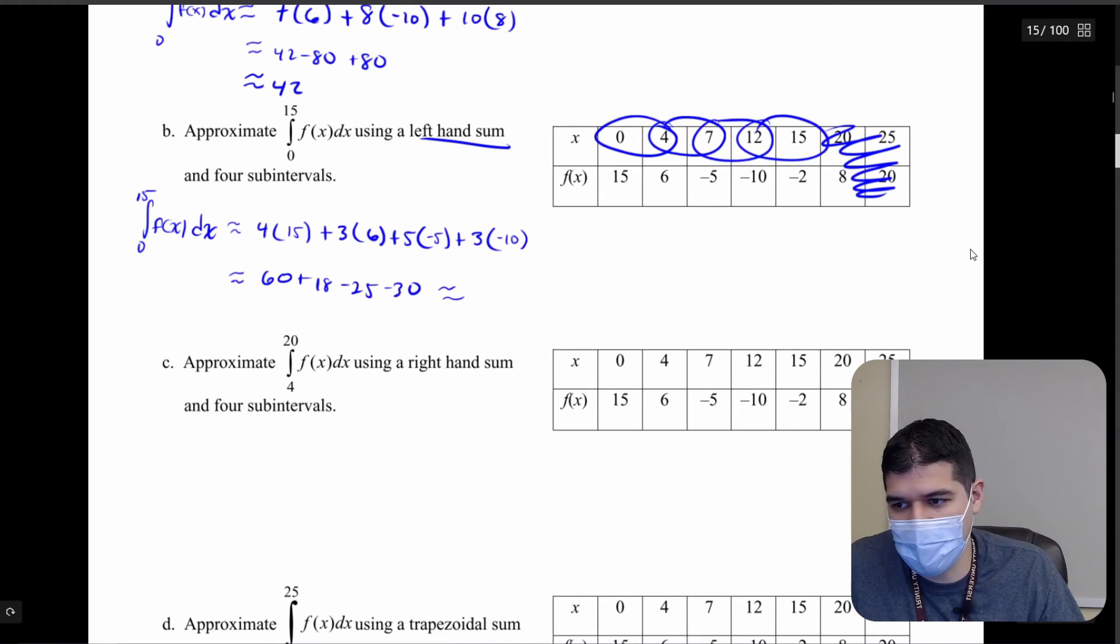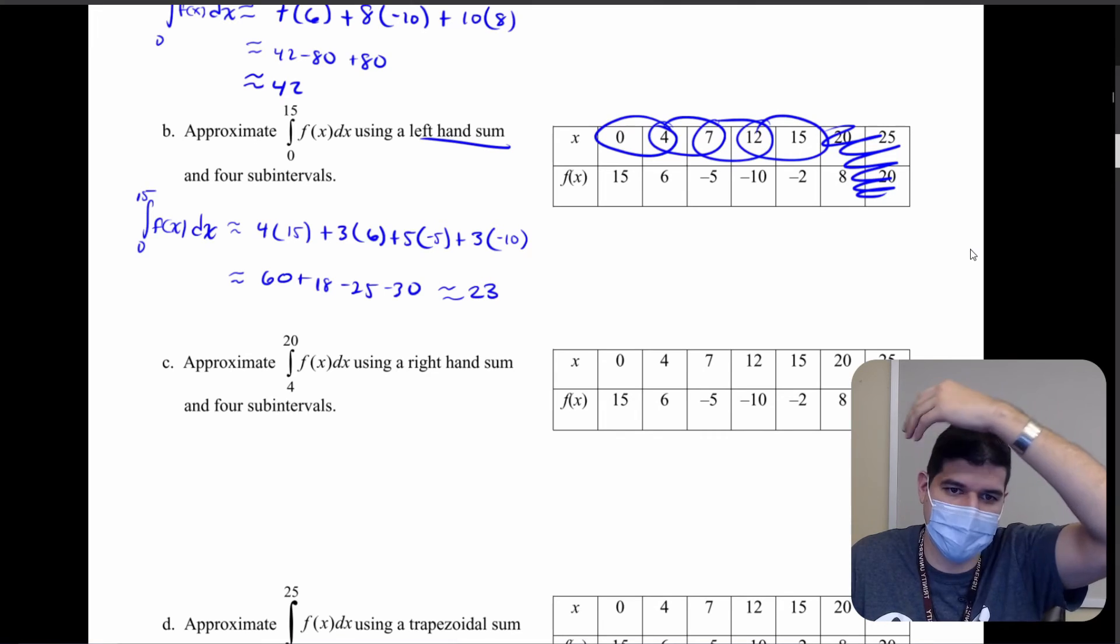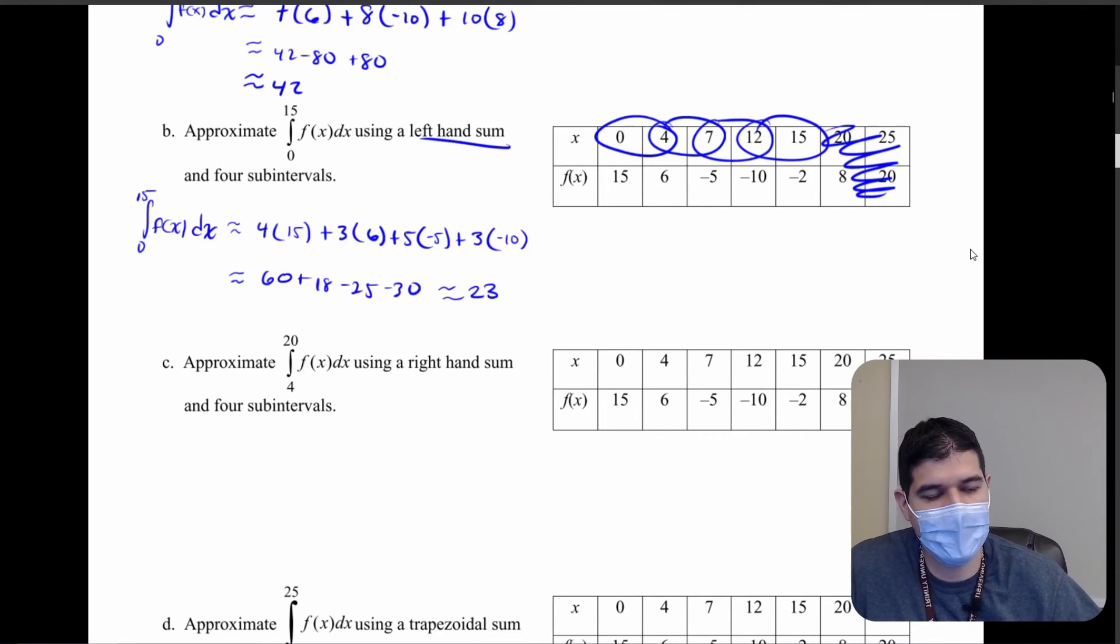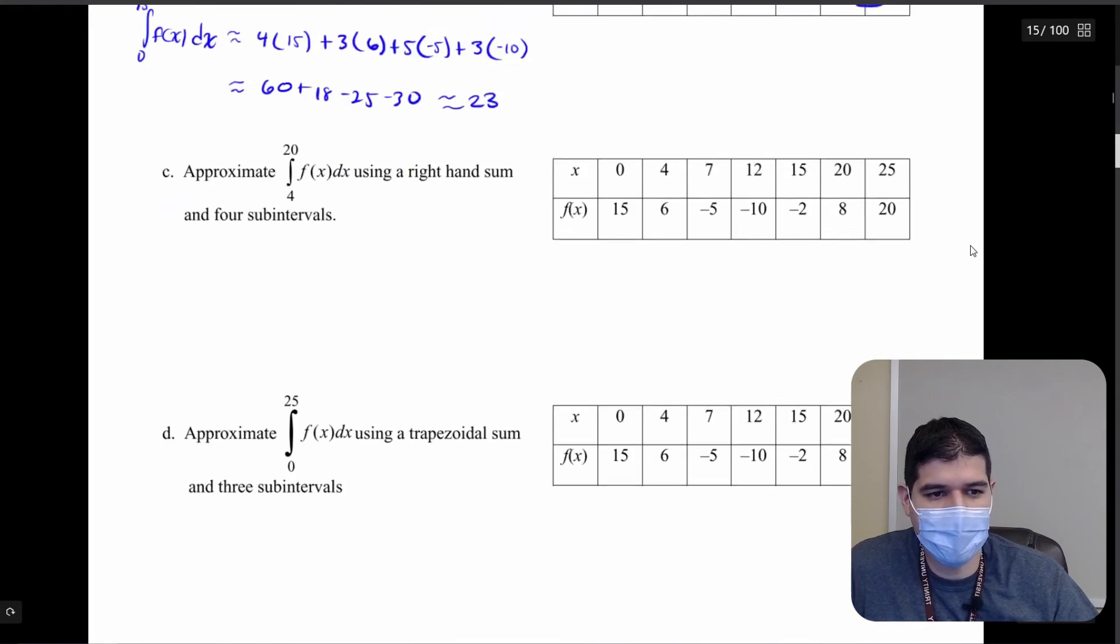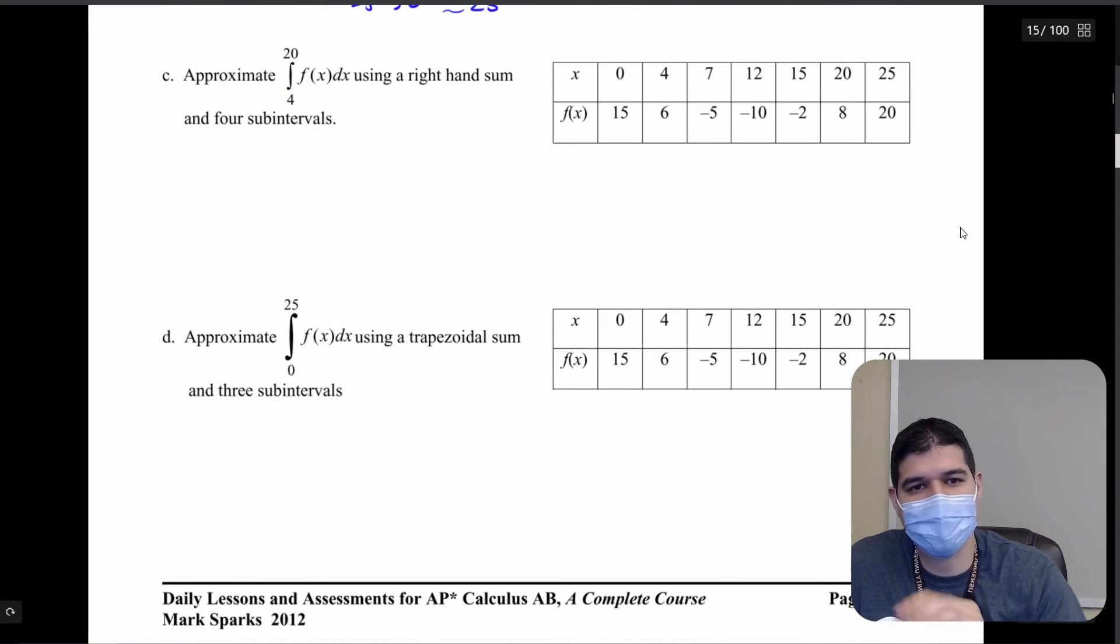And again we're just keeping the approximation signs as we go through this but you're just cutting off your intervals and you're being very clear: left, right, midpoint, trapezoid, and you're using those same calculations that we learned about before. So now I'm going to let you guys go ahead and take a step at these last two problems c and d.